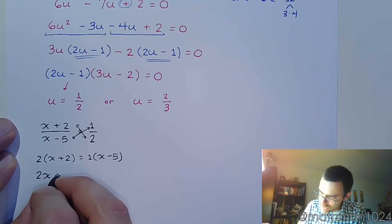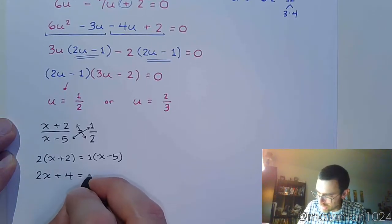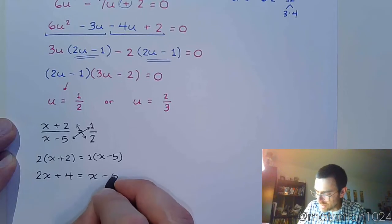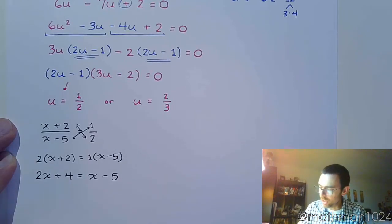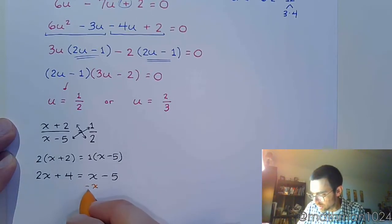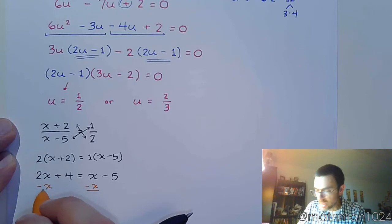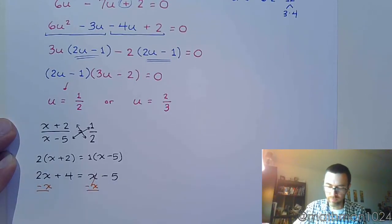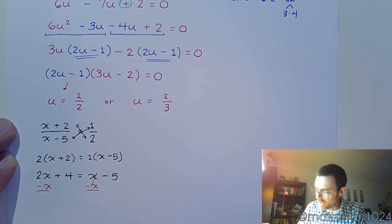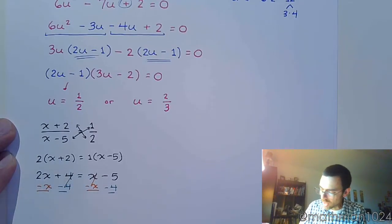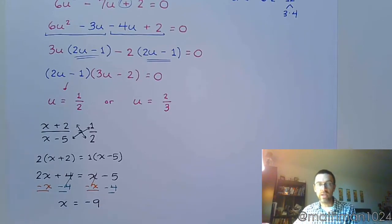So this is 2x plus 4 equals x minus 5. Do your manipulating with the equation. Subtract x on both sides. And then move the constant to the other side, so subtract 4.